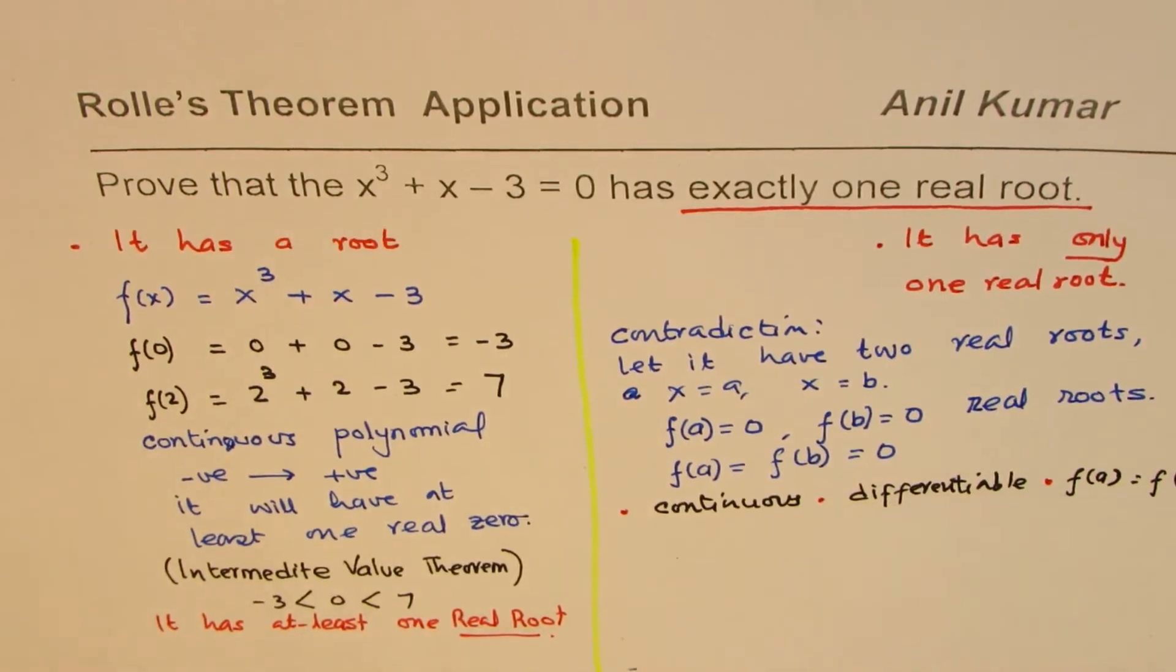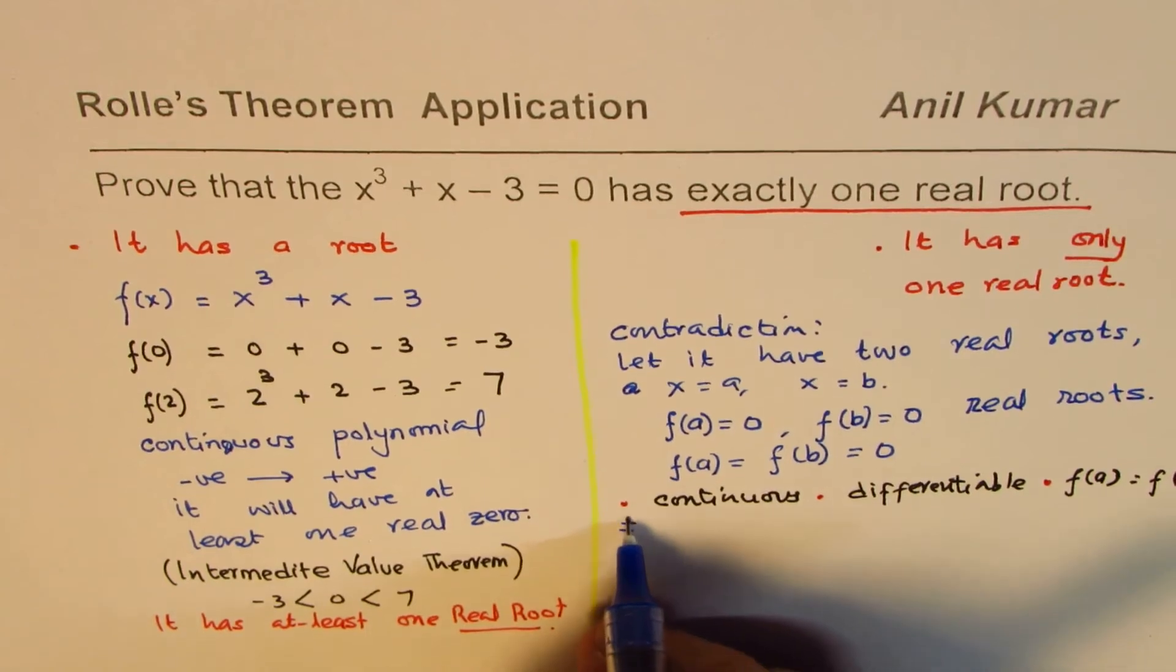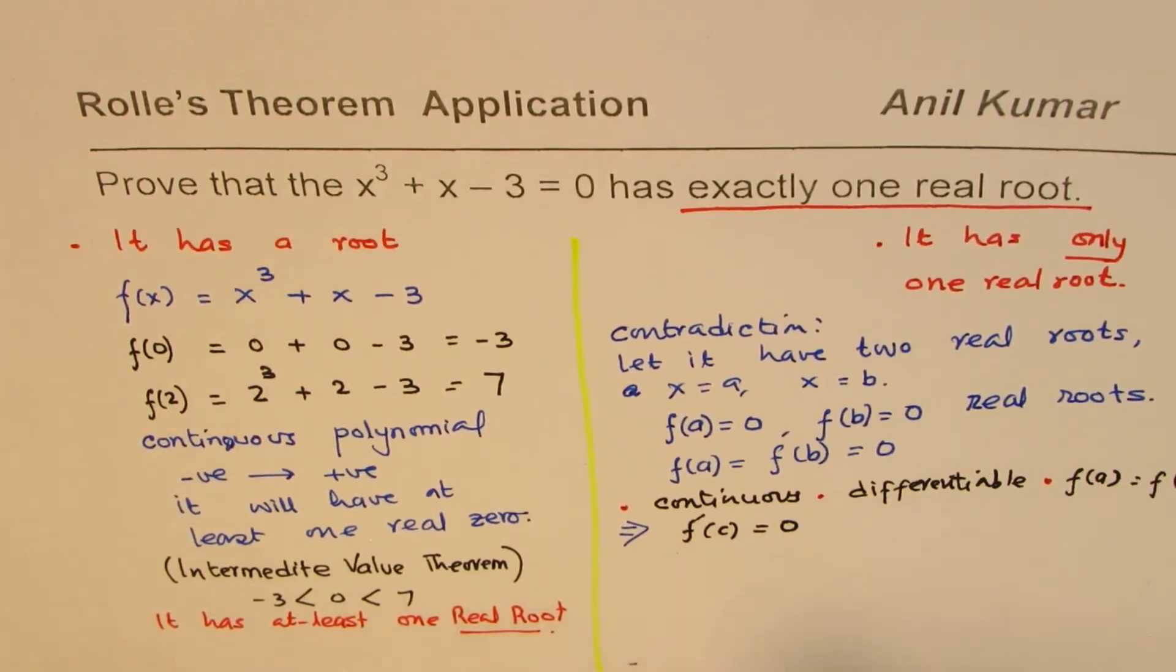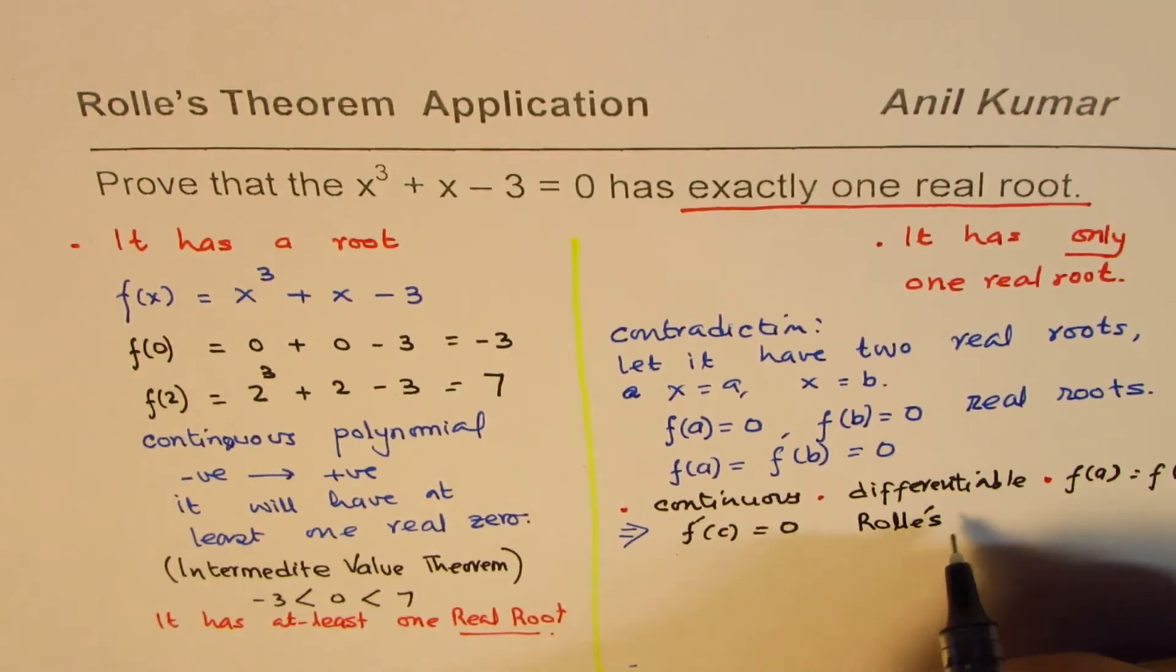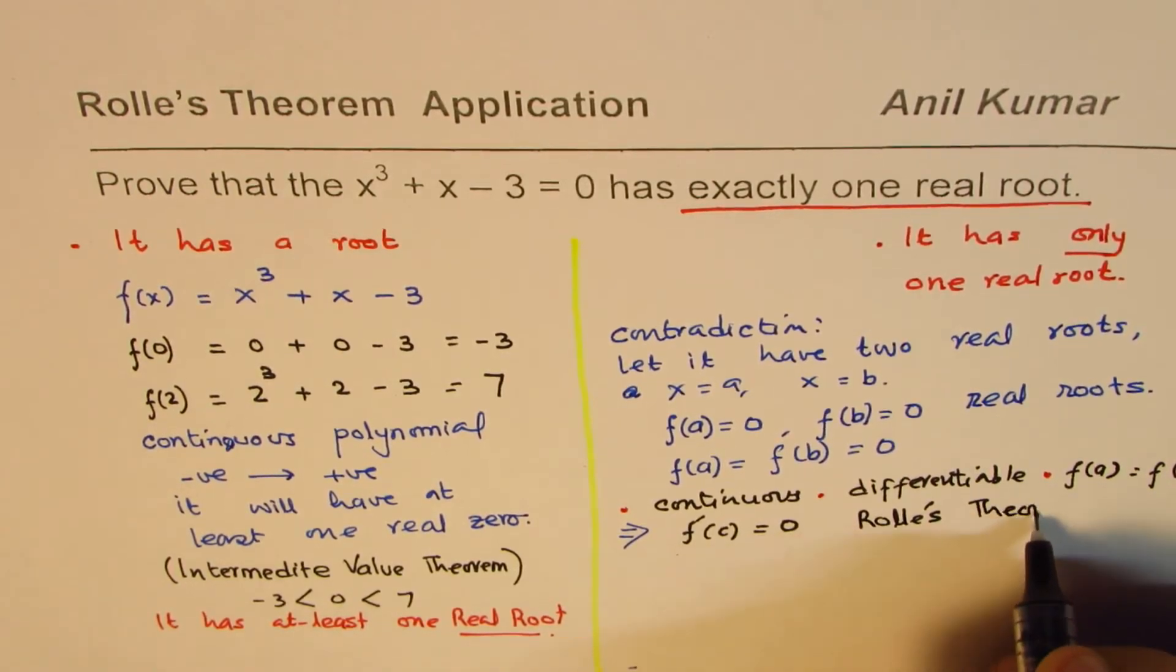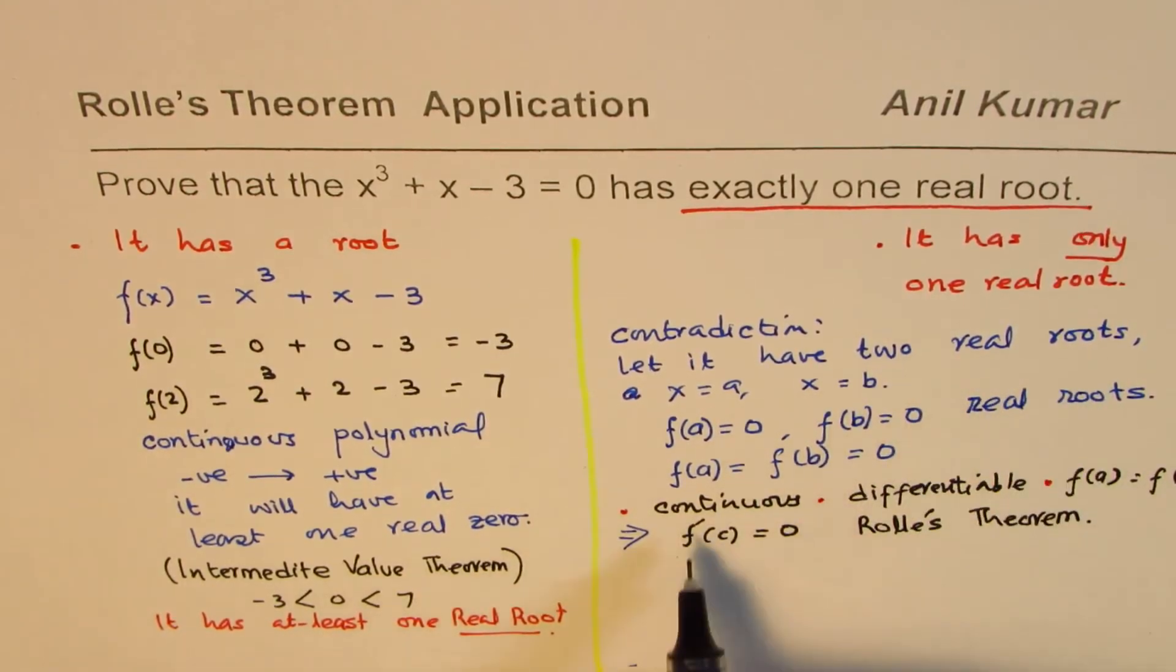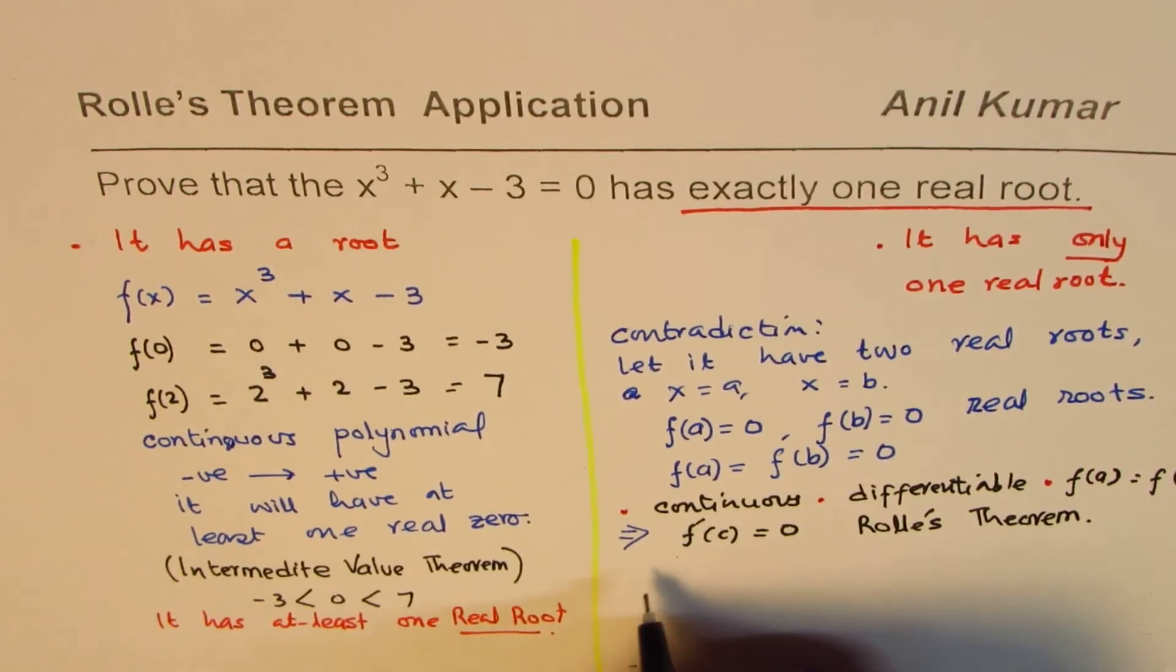Now, if that is true, then what can we conclude from Rolle's theorem? Then we can conclude that there is a point c so that f dash c is equal to 0. So if it has two roots in that case, derivative of this function should be 0 for at least one point. So let's find out this point.